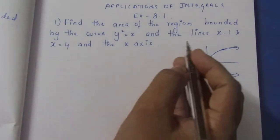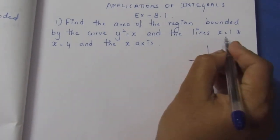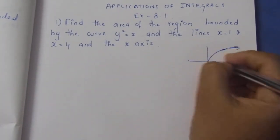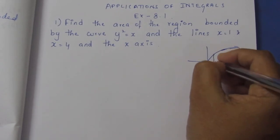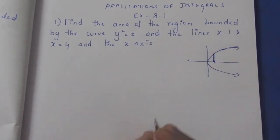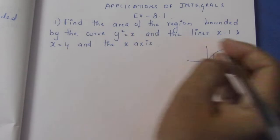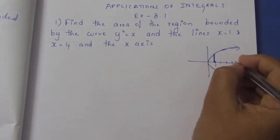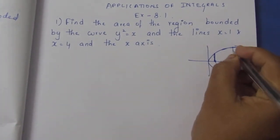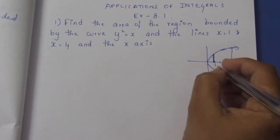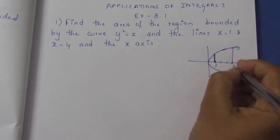Now we have x equal to 1, which is a line parallel to the y-axis. x equal to 1 and x equal to 4 — marking 1, 2, 3, 4 — so x equal to 1 and x equal to 4.